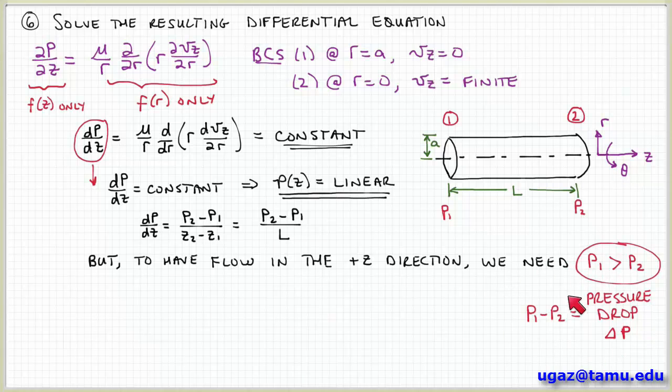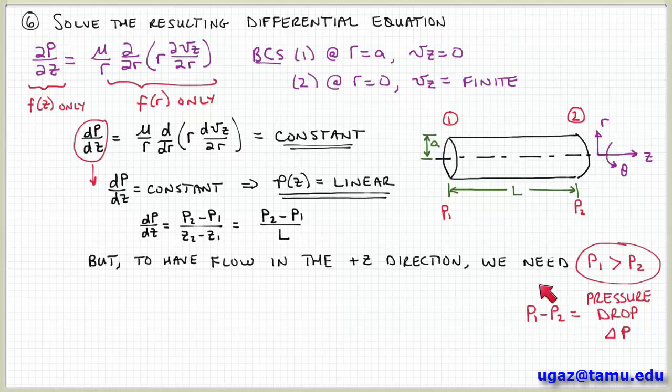often we can define a term called a pressure drop, delta p, which is defined as p1 minus p2. And this is a positive quantity. Why do we do that? Well, often times it seems that we prefer to work with positive numbers rather than negative numbers. So it's basically the same thing. It's just arranged in a way that makes this pressure drop a positive quantity. So if we say the pressure drop across this pipe is 100 psi, then that means that p1 minus p2 is 100 psi.